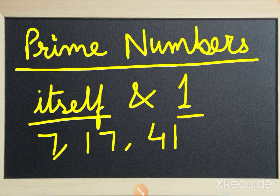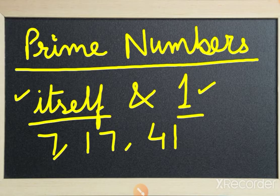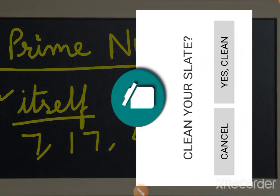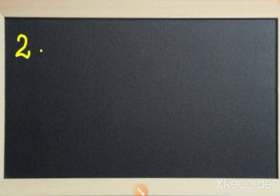Prime numbers are the numbers that have only two factors, that is one and themselves. Sometimes they can ask how many prime numbers are there between one to hundred. We can start from two, because two has only exactly two factors.